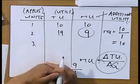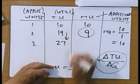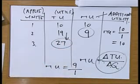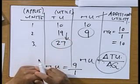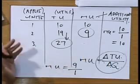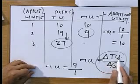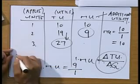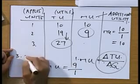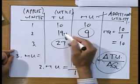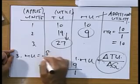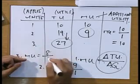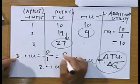For the third apple, the total utility increases from nineteen to twenty-seven. So the total utility for three apples is twenty-seven. Using the same formula — MU = ΔTU / ΔQ — the change in TU from nineteen to twenty-seven is eight, and the quantity changes by one. So the marginal utility for the third apple is eight.